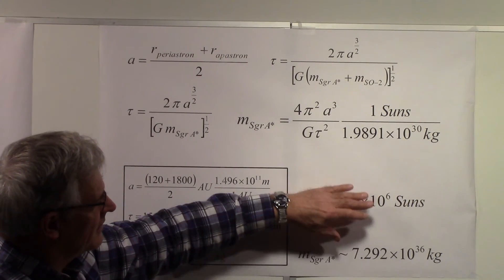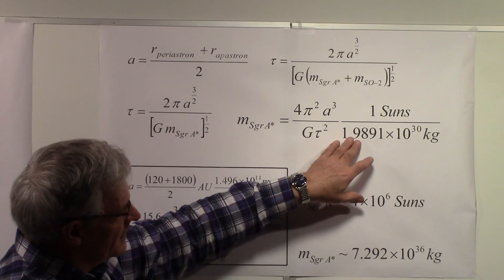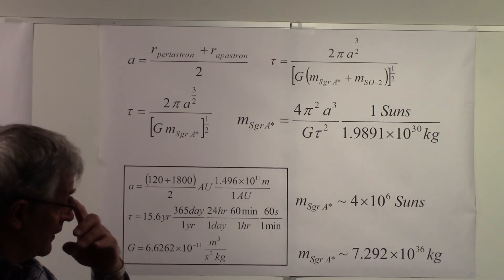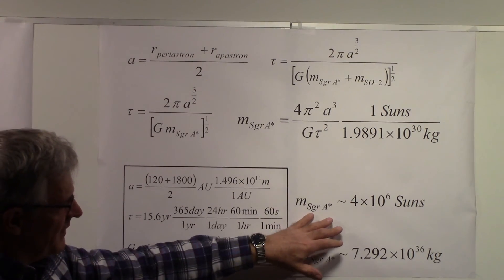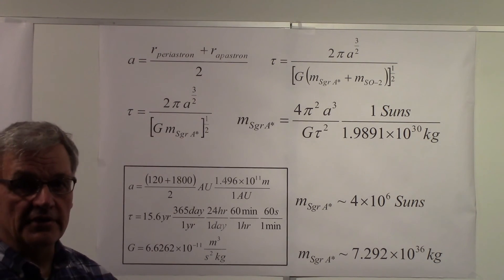If you like to see the mass in terms of suns, the mass of the Sun is roughly 2 times 10^30 kilograms, so the mass of Sagittarius A* is roughly 4 million suns.